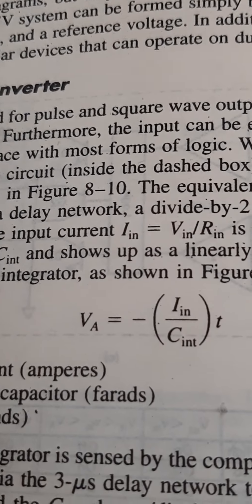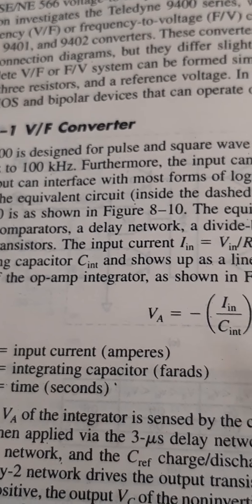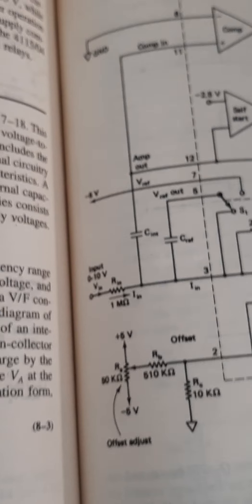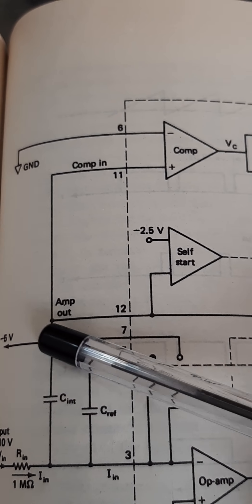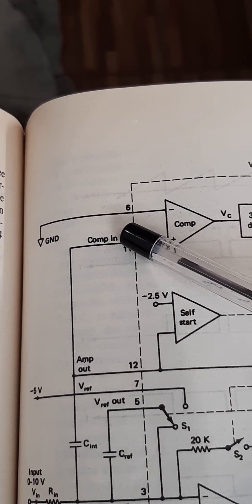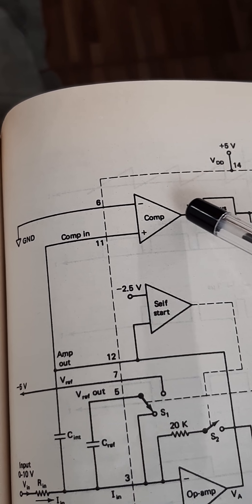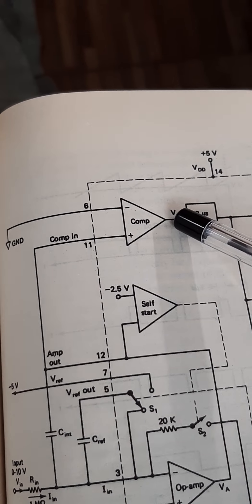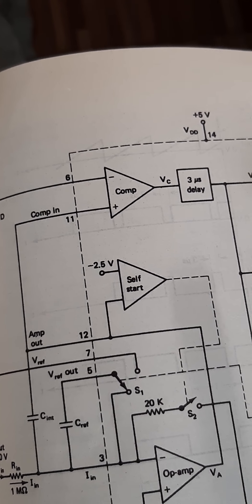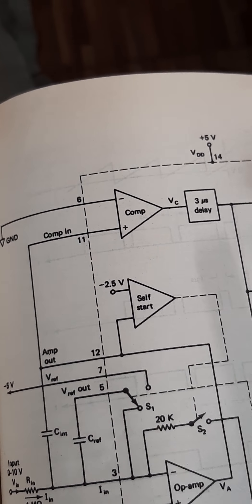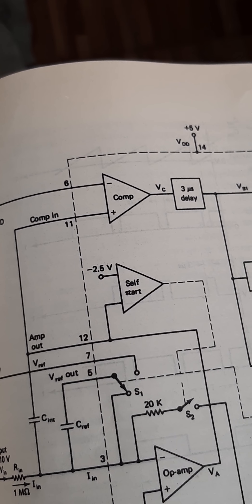The output VA of the integrator is sensed by the comparator. The output of this comparator is applied to a 3 microsecond delay network and to the output transistor Q1. It is also connected to a divide-by-2 network that drives the output transistor Q2.